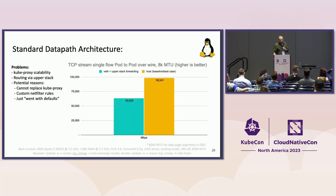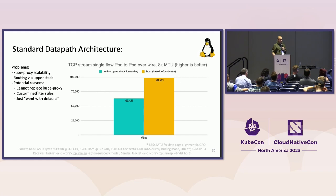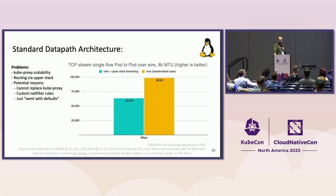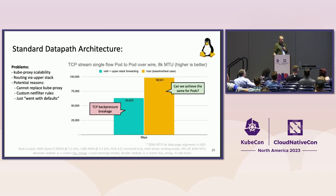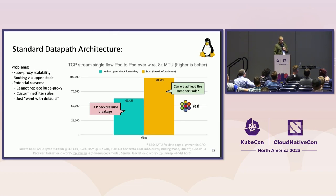When you look at the performance, the yellow bar on the right shows when the application is inside the host itself doing a TCP stream workload test with a 100 Gbps NIC over wire, with two machines back to back. With 8K MTU, you reach 100 gigabit per second. But if you look at the upper stack forwarding with veth devices, it's not that great — it's only 63 gigabit — and the reason is because TCP back pressure breaks. So the question is really, can we achieve the same performance for Kubernetes pods as well? The answer is yes, and I will take you through the journey we did.